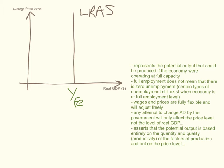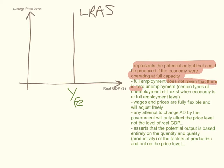So let's elaborate a bit more. The monetarists believe that this long-run aggregate supply curve represents the potential output that could be produced if the economy was operating at full capacity. Full employment doesn't necessarily mean zero unemployment — economists believe that certain types of unemployment, like seasonal or frictional unemployment, still exist even when the economy is at full employment level. You'll find out what these mean when we discuss unemployment in future lessons.